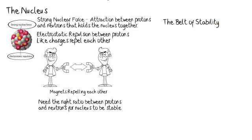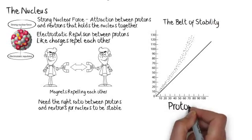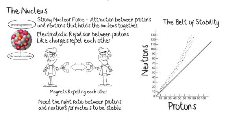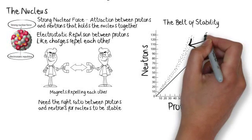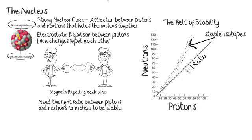So what we have here is the belt of stability. It's a graph of all the stable isotopes that exist. On the x-axis we have protons. On the y-axis we have neutrons. The line that goes up diagonally is a one-to-one ratio of protons to neutrons. And you can see where the stable isotopes are. They start out at a one-to-one ratio of protons to neutrons and then gradually curve up to a 1.5 to 1 ratio of neutrons to protons.